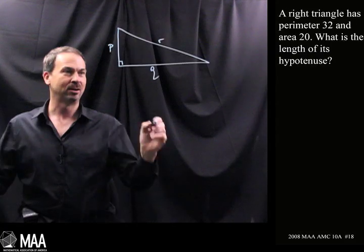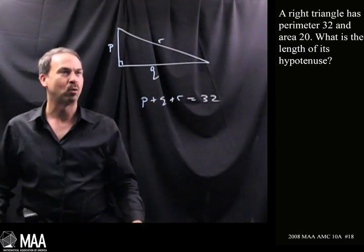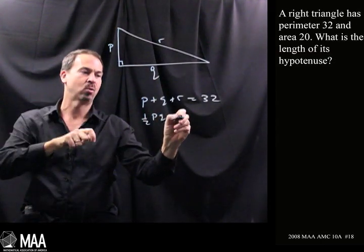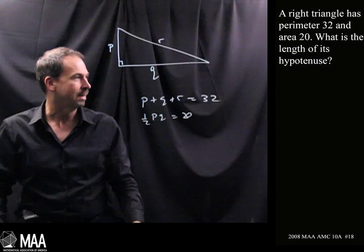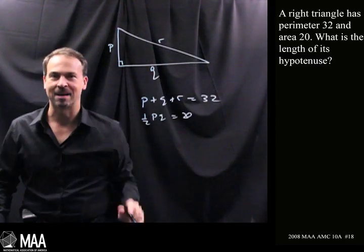We're told the perimeter is 32. P plus Q plus R is 32. Its area is 20. So half the base times the height. Half PQ is 20. And our job is to work out the length of the hypotenuse and how I've set this up I need to work out the value of R.